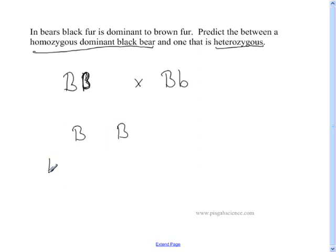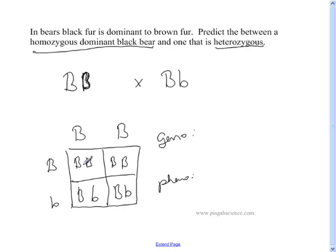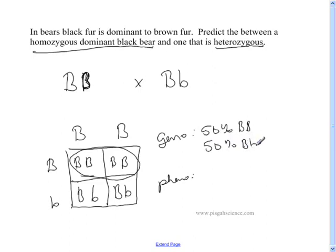I'm going to make my Punnett square box and put a letter on each side, then fill in the box — bringing big B down and B across for each cell, giving us two boxes of capital B, capital B and two boxes of capital B, lowercase b. For genotype: 50% is capital B, capital B, and the other 50% is capital B, lowercase b.